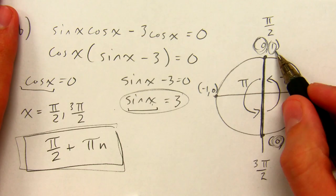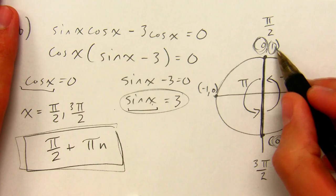I was saying, on the unit circle, sine is the y value, right? So I'm looking for where the sine, where the y value on the unit circle is 1.